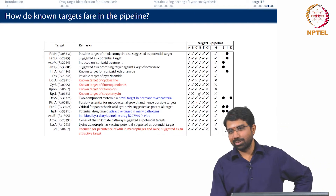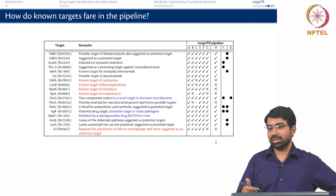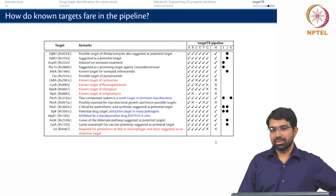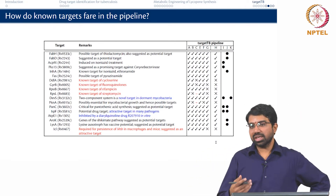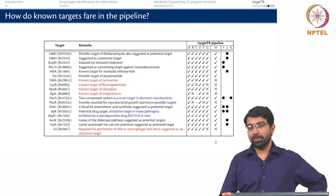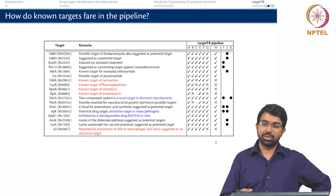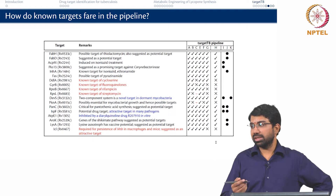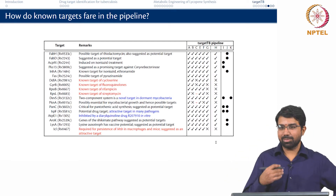Streptomycin likely inhibits protein translation, and that machinery is very similar across many bacterial species. None of the drugs were originally developed with concern for gut flora — only recently has there been emphasis on the negative effects on gut flora. One study showed it takes about 24 months for your gut to recover following antibiotic administration, by which time you may have needed another dose. So antibiotics are essentially quite harmful to the gut.